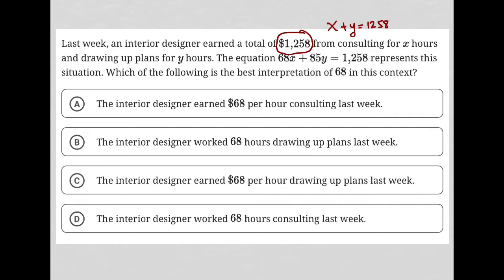The next sentence says the equation 68X plus 85Y equals 1258 represents the situation. So what we just figured out is that this interior designer is making $68 per hour for consulting and $85 per hour for drawing up plans. The 68 is associated with X, and since X hours is associated with consulting, the 68 must be how much the interior designer earned per hour for consulting last week.